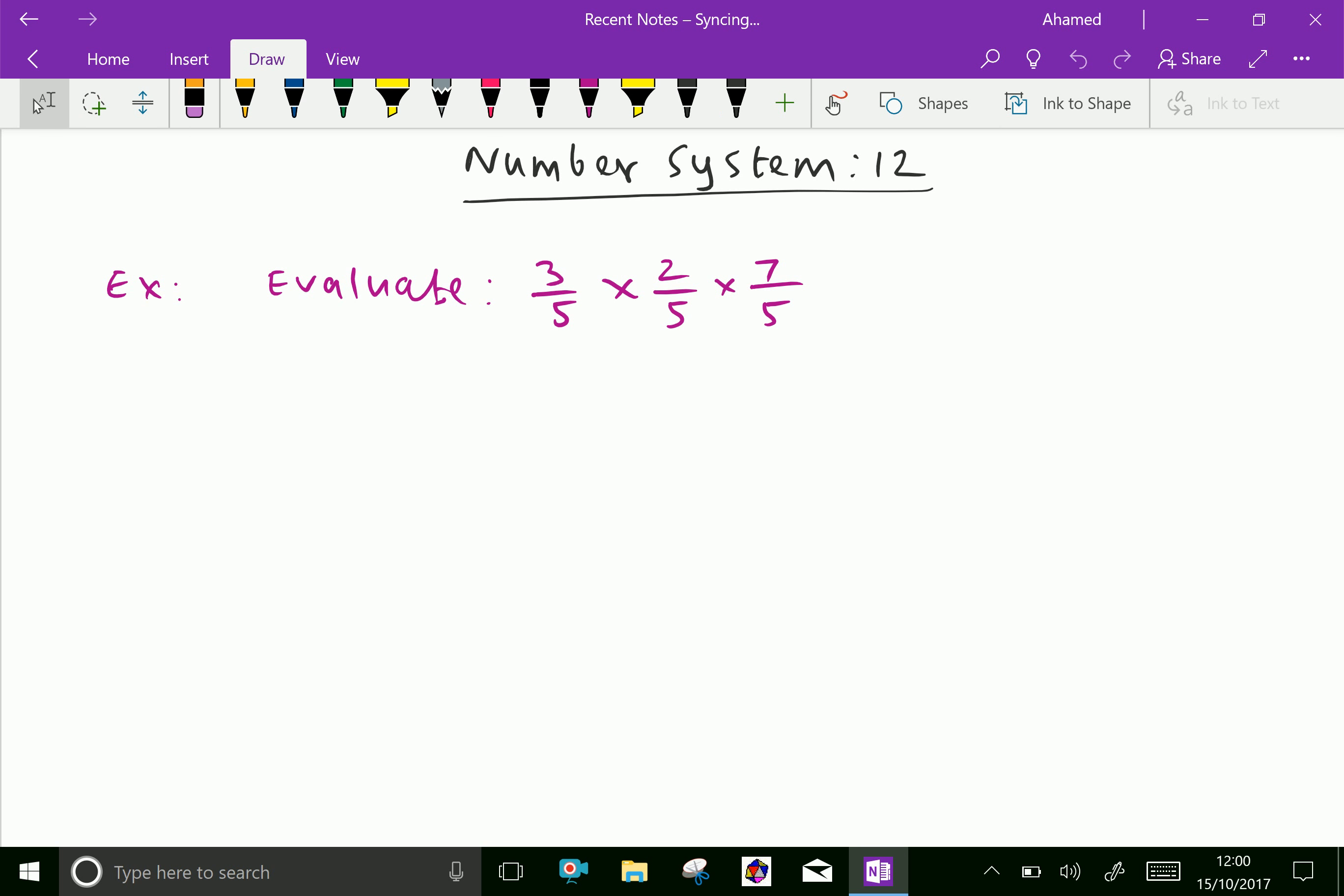Example: evaluate 3 over 5 multiply 2 over 5 multiply 7 over 5. For multiplication, just multiply the numerators and denominators and simplify.